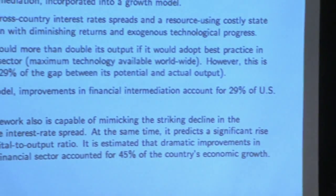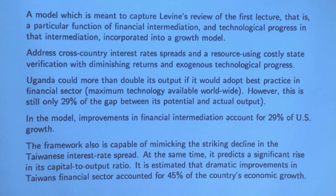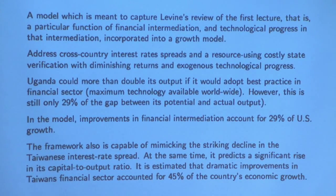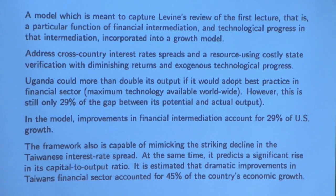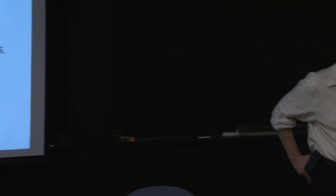The paper takes a costly state verification point of view with diminishing returns and exogenous technological progress. There's a telling sentence in the paper: Uganda could more than double its output if it adopted best practice in the financial sector — something like the US or Luxembourg — although that alone isn't enough to get it to its total potential output. You see this language of gaps, very much trying to get at gaps in terms of the underlying model.